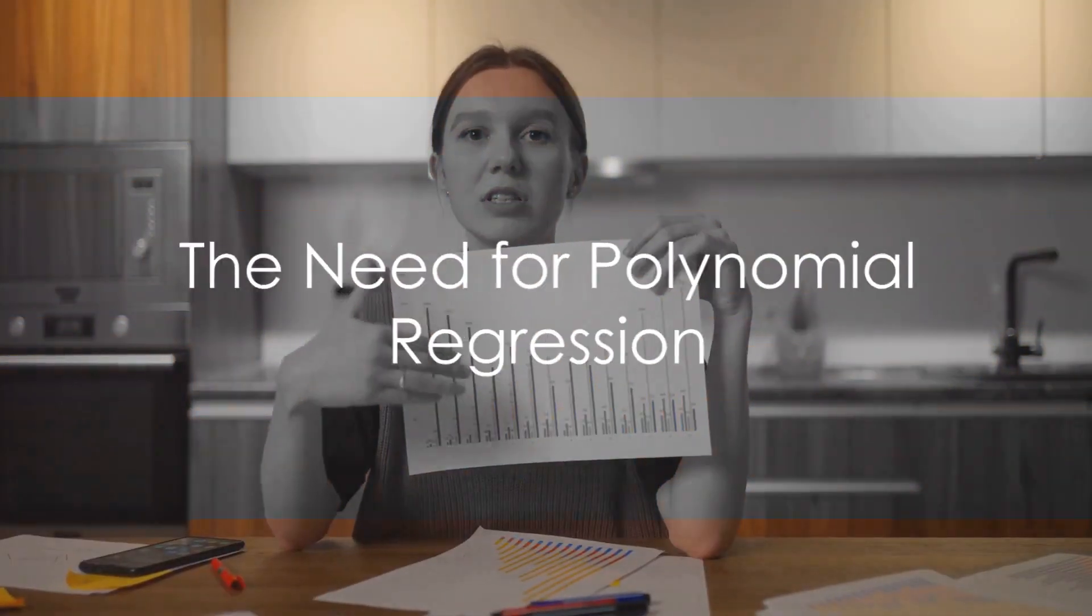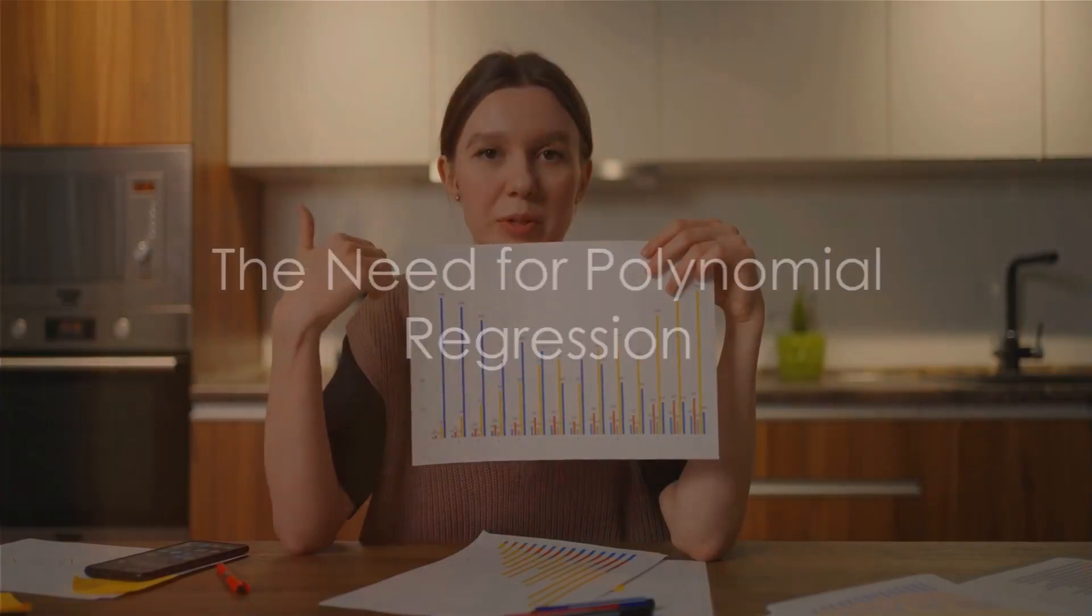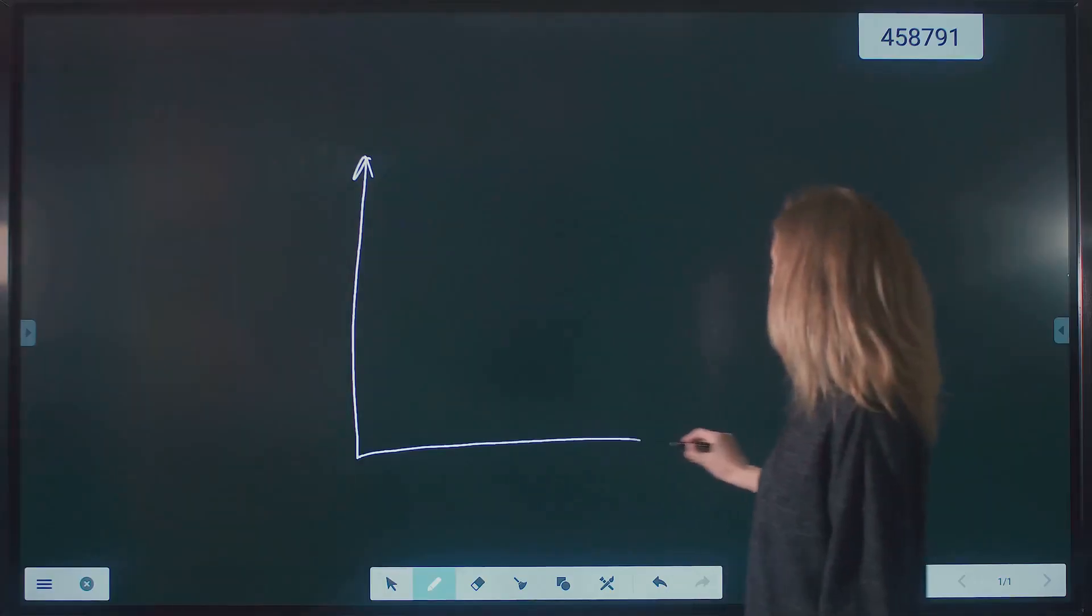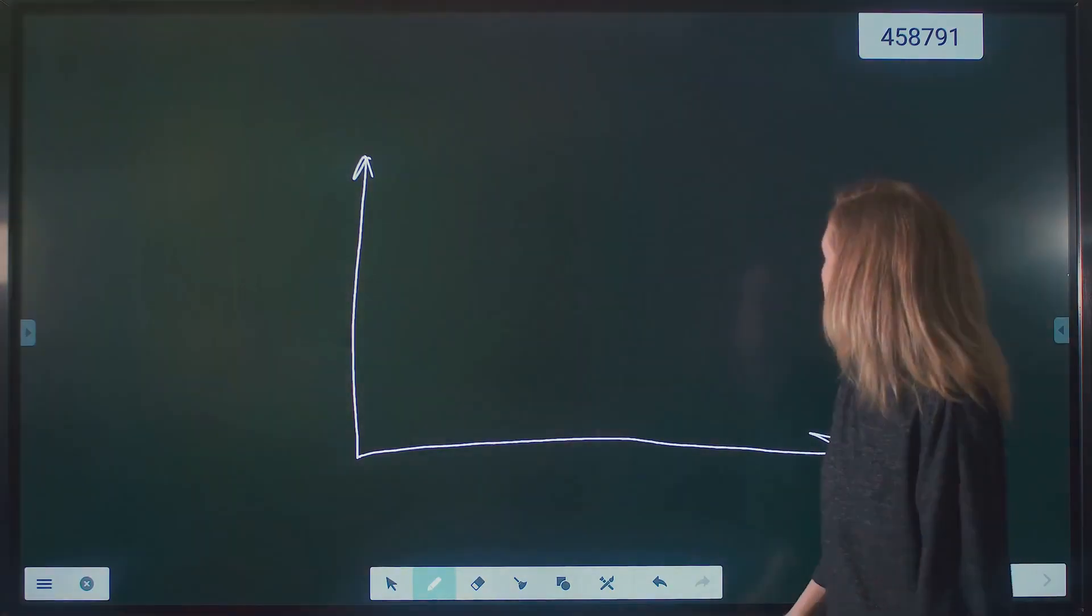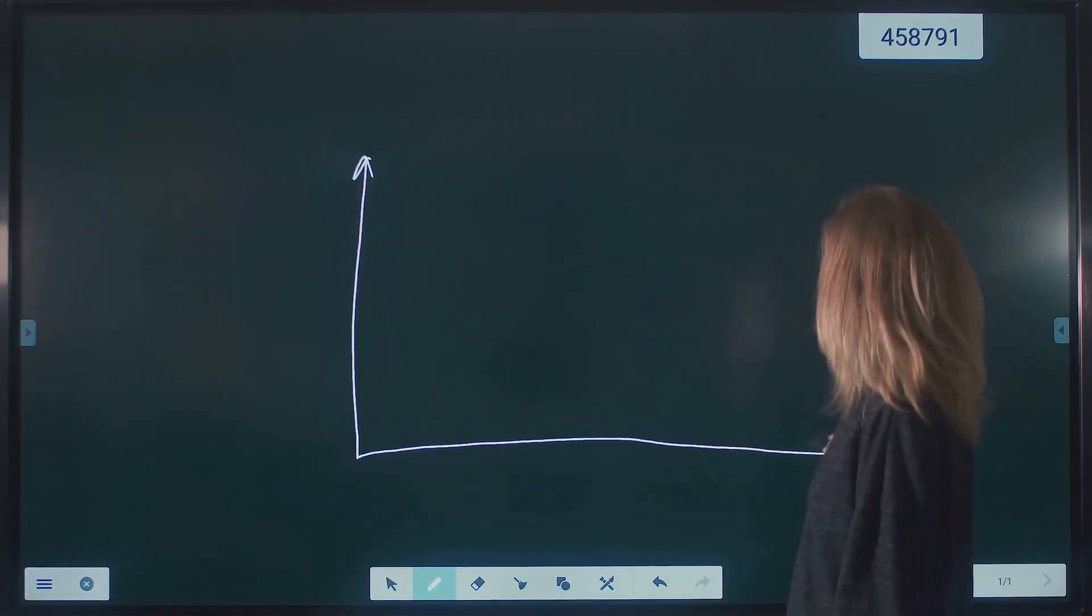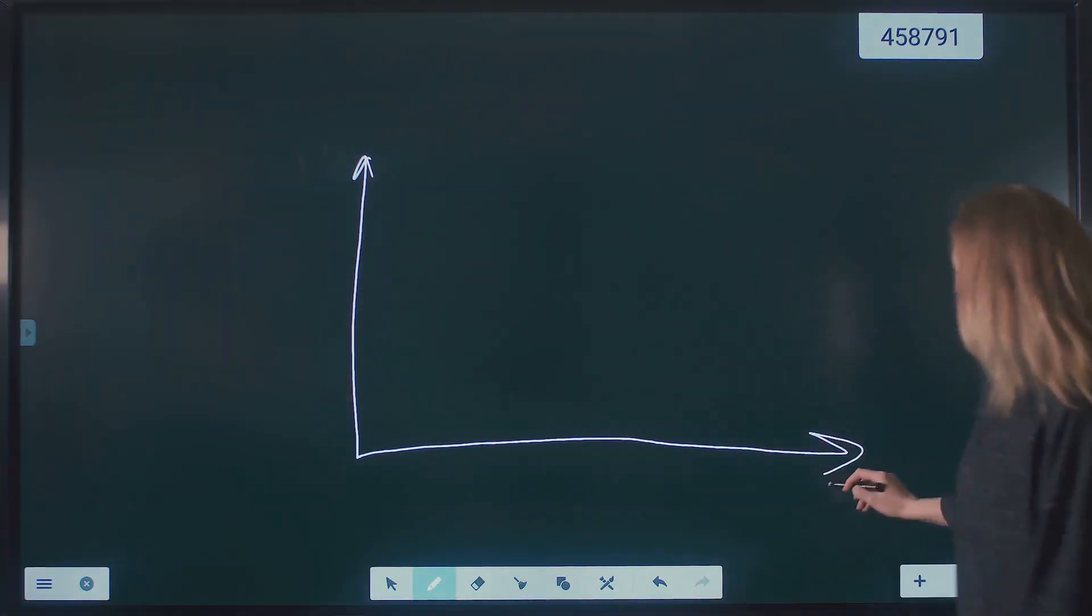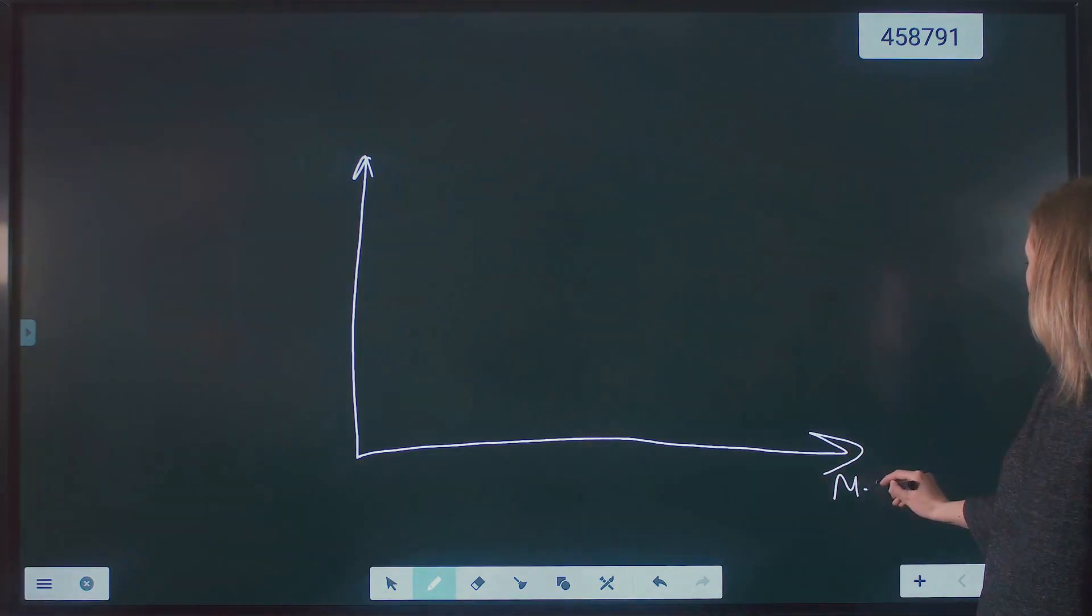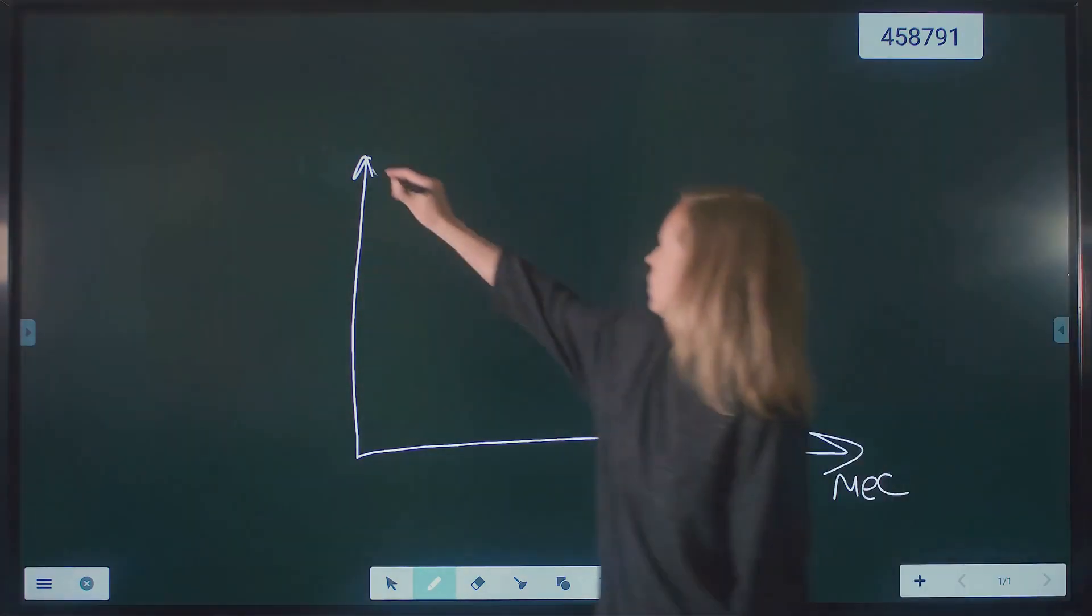Now let's embark on a journey that will simplify polynomial regression for us. Consider a scenario where the relationship between x and y is not linear, meaning a straight line cannot fit the data points accurately. In such a case, we turn to polynomial regression, which enables us to create a curve that can fit the data points more accurately.